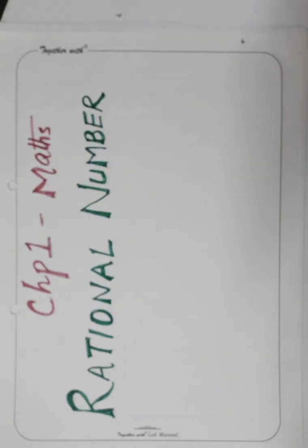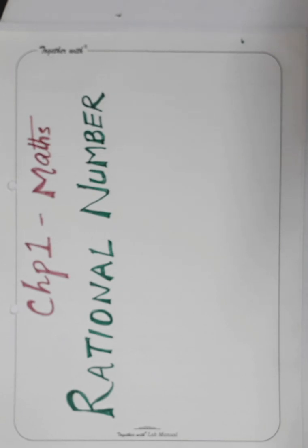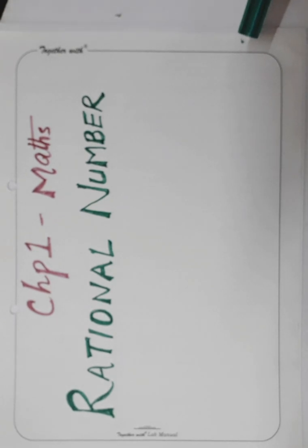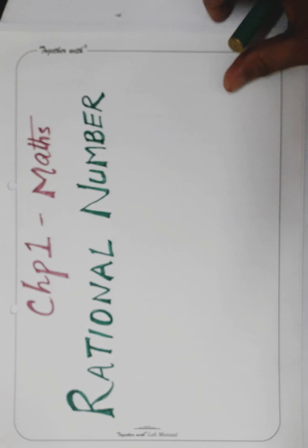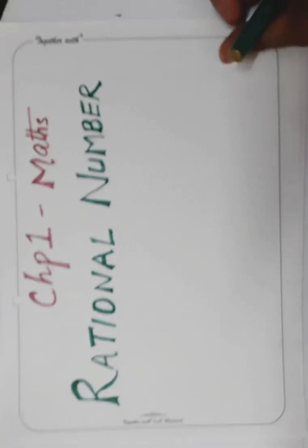Today we have to start Exercise 1C. But before starting, let's have a small recapitulation. Yesterday we did addition of rational numbers — addition properties and all related properties. There was one more property, that of subtraction. We did all five properties of addition of rational numbers. Same we have to practice with subtraction of rational numbers. After subtraction properties, we will start Exercise 1C.